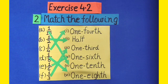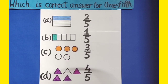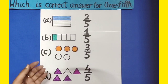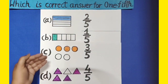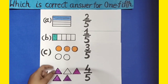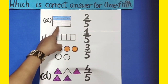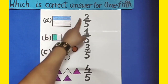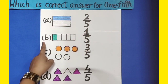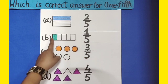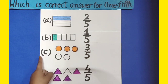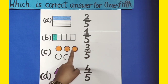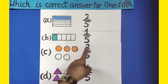Dear students, here is a multiple choice question — which is the correct answer for 1 fifth? There are 4 options and we will tick mark the correct option. In part A, out of 5 equal parts, 2 are colourful, so its fraction form is 2 by 5. In part B, out of 5 equal parts, 1 is colourful, so its fraction form is 1 by 5. In part C, out of 5 equal circles, 3 are colourful, so its fraction form is 3 by 5.